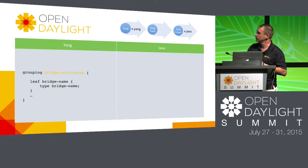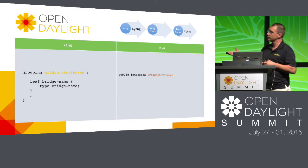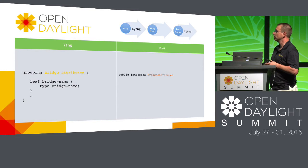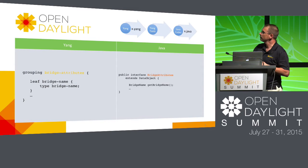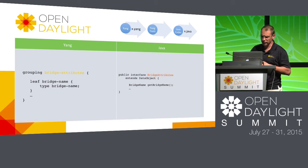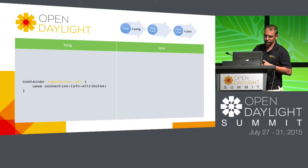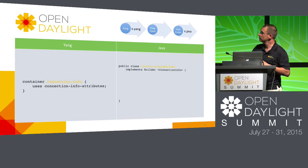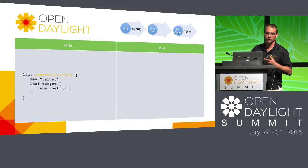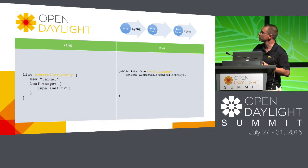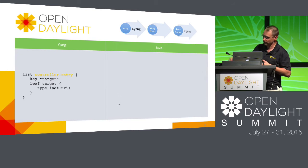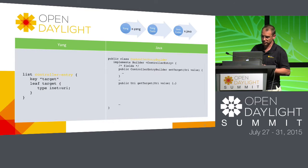Here we have a grouping in Yang of bridge attributes, with a leaf inside the grouping container called bridge name with its type, and we generate the class from that. You would go back after generating this and augment it. There's also a container definition example, and here we have a list — we can generate the code for searching through the list.